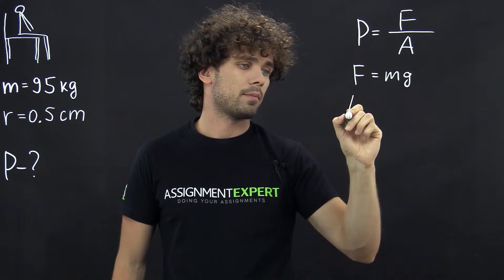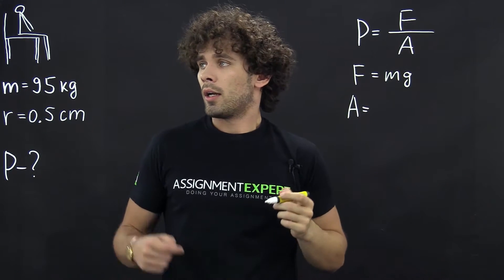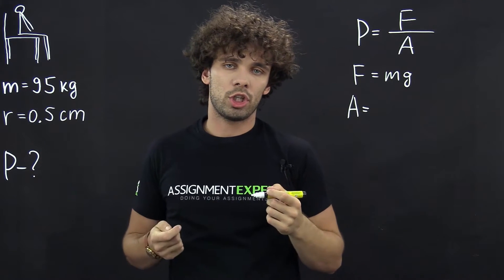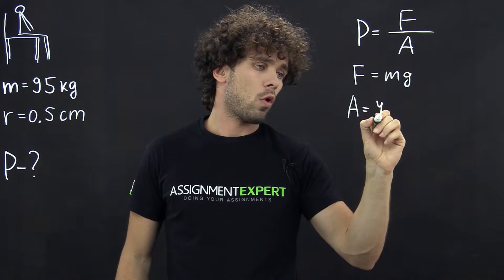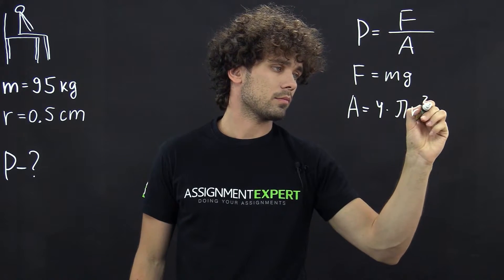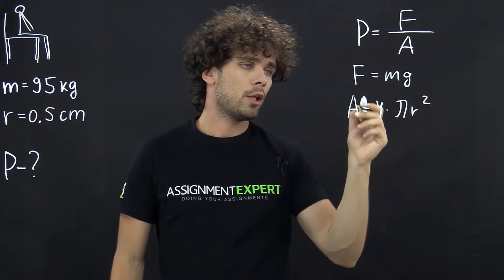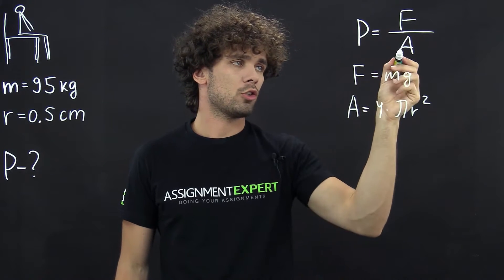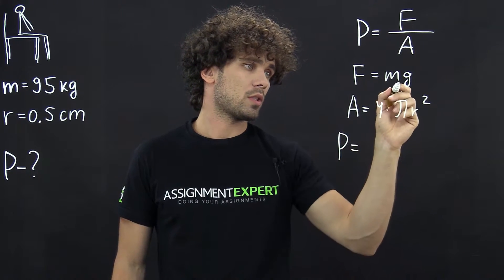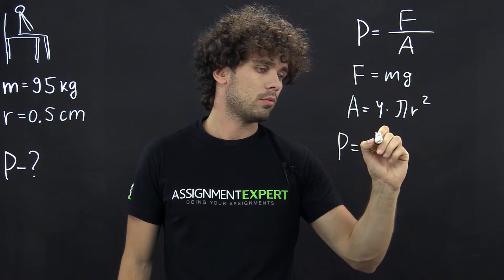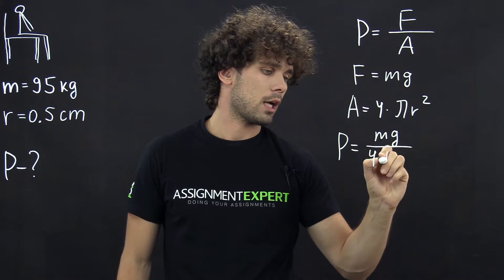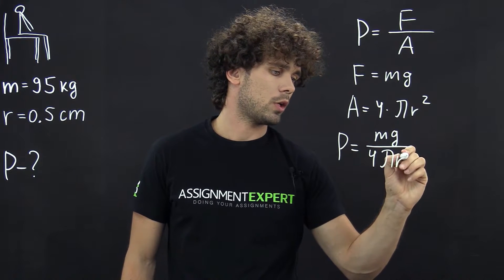Now the area. Our force is applied through four legs of the chair, so the area will be 4 — the number of legs — times pi r squared. Knowing these two formulas, we can transform the first formula: P equals mg over 4 times pi times r squared.